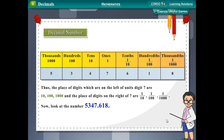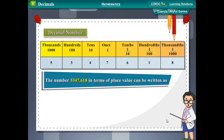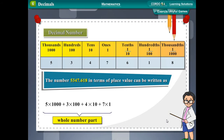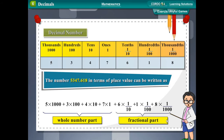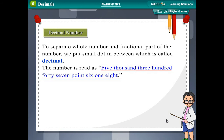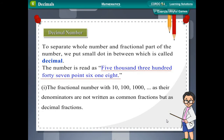Consider the number 5347.618. In terms of place value it can be written as 5×1000 + 3×100 + 4×10 + 7×1 (the whole number part), plus 6×(1/10) + 1×(1/100) + 8×(1/1000) (the fractional part). To separate the whole number and fractional part, we place a small dot between them called the decimal point. The number is read as five thousand three hundred forty-seven point six one eight.